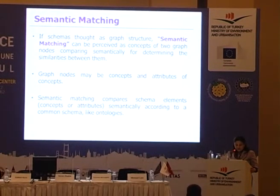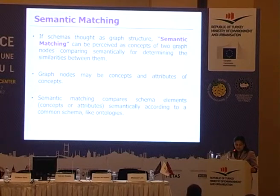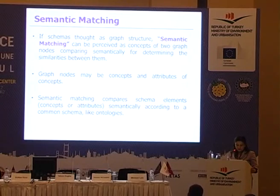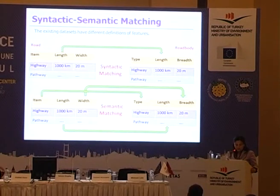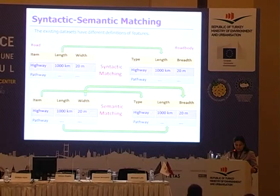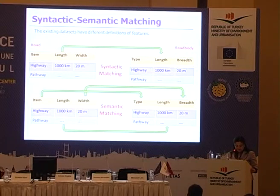If a schema is treated as a graph structure, semantic matching can be perceived as comparing two graph nodes semantically to determine the similarities between them. Graph nodes may be concepts or attributes of concepts. Semantic matching compares schema elements semantically according to a common schema and ontologies. The existing datasets have different definitions of features — for example, a road table versus a road body table — and for semantic matching, length may be equivalent to breadth and length.